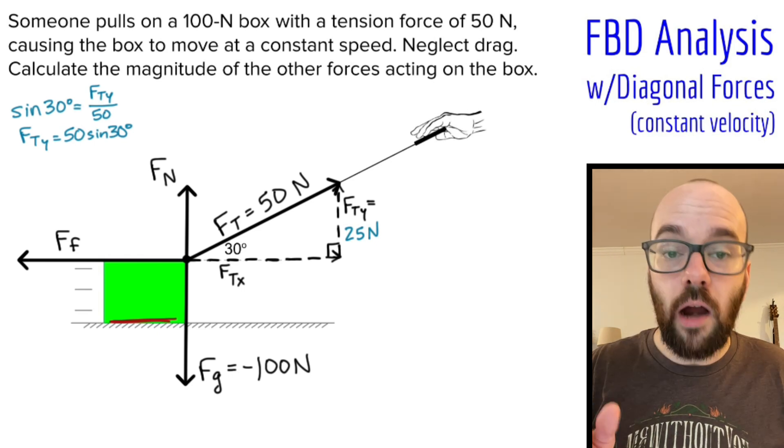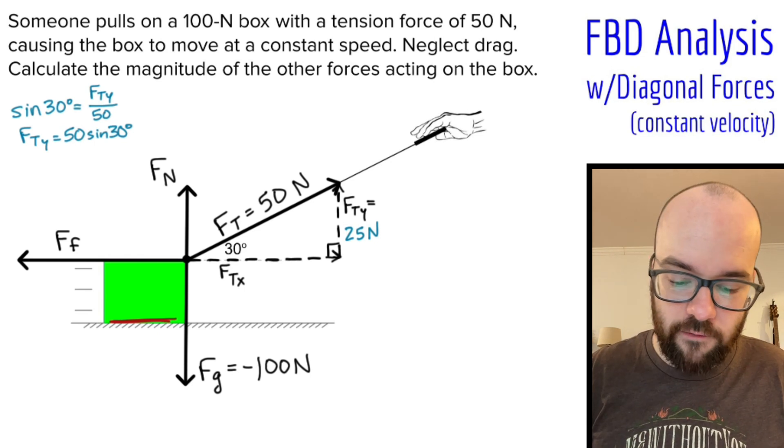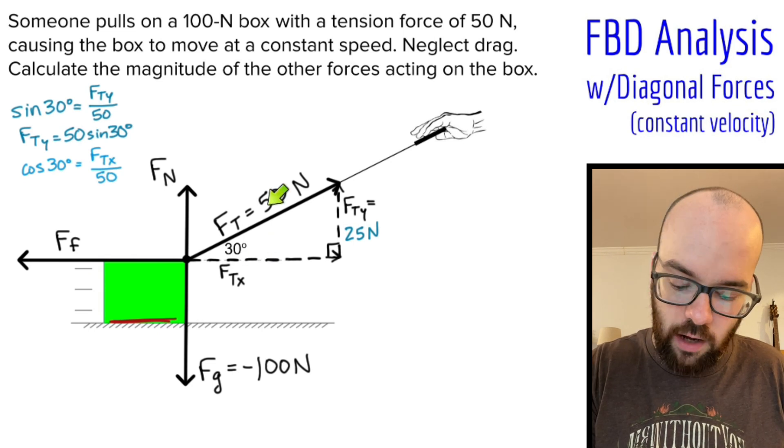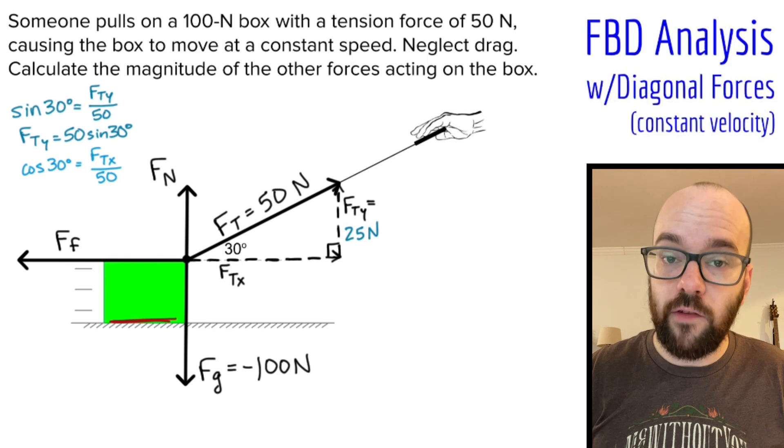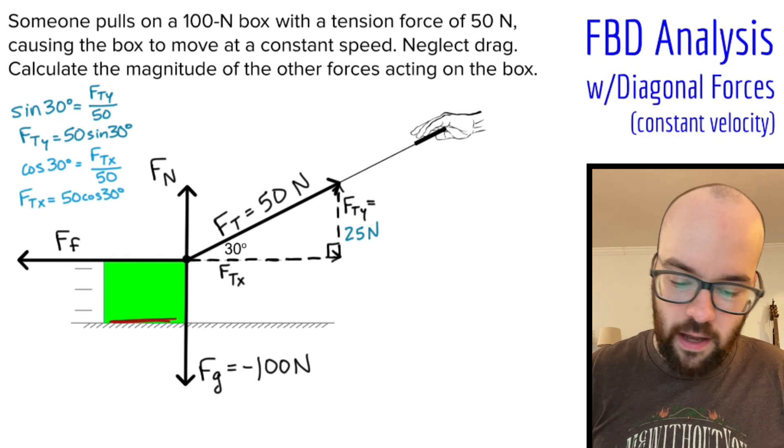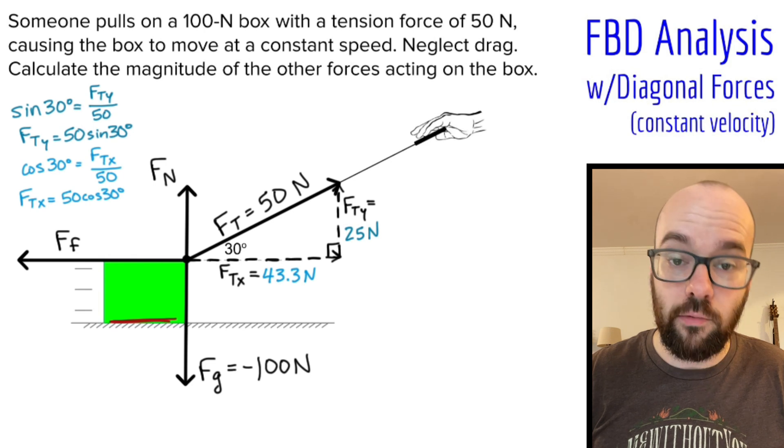We'll do the same thing but with cosine to find FTX. So cosine of 30 degrees equals adjacent FTX over hypotenuse 50. I'm going to multiply by 50 on both sides, and I get FTX equals 50 cosine of 30. Put that into the calculator, and I get 43.3 newtons.